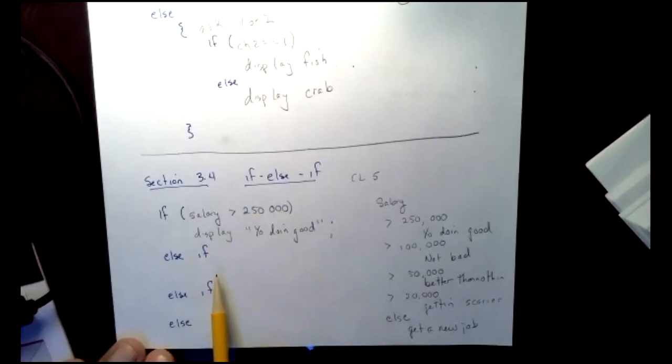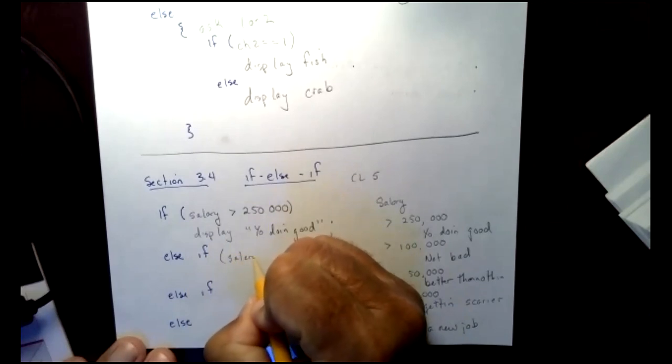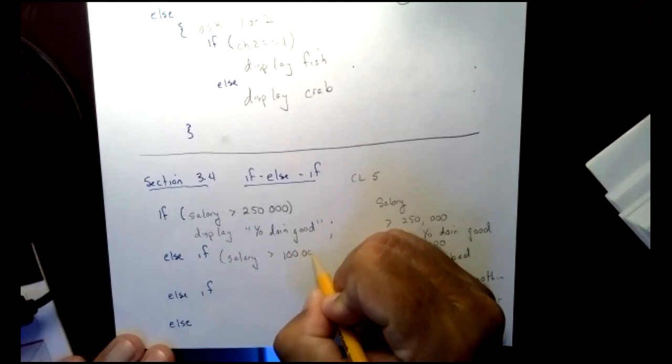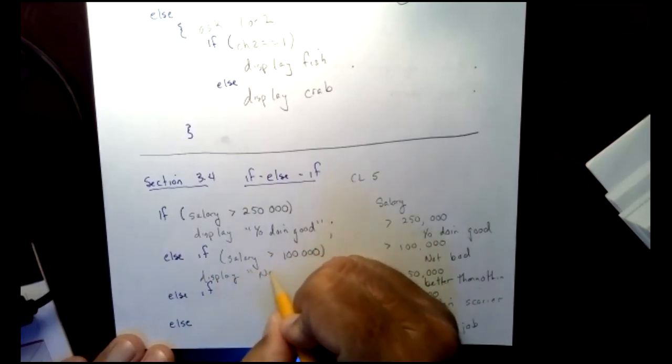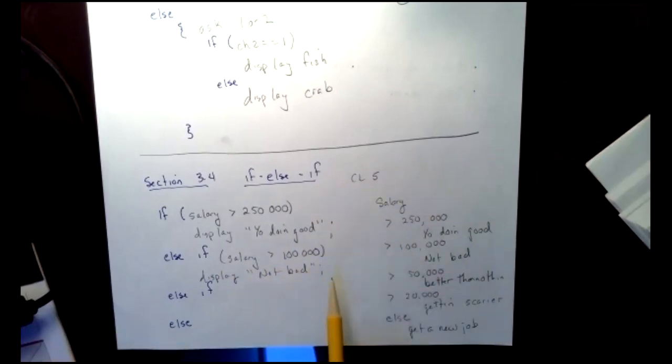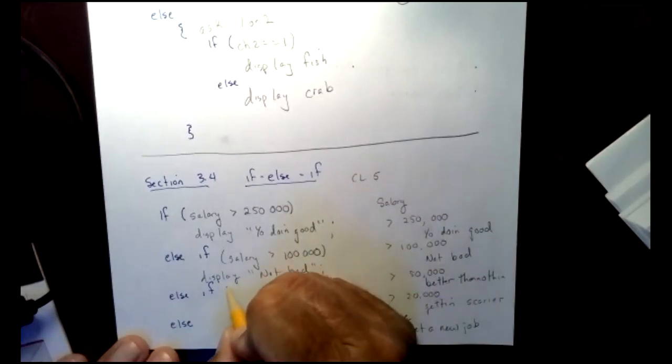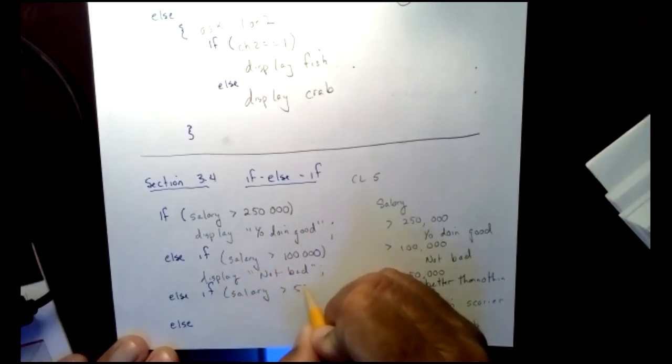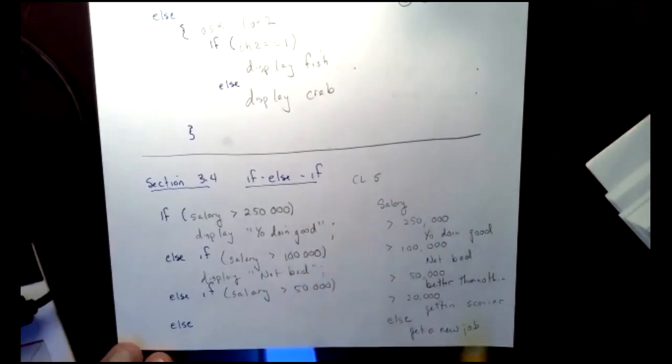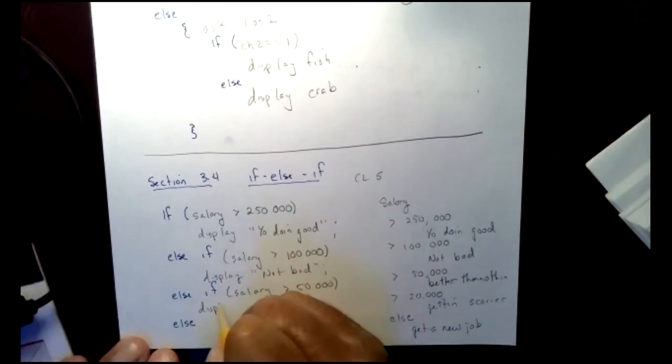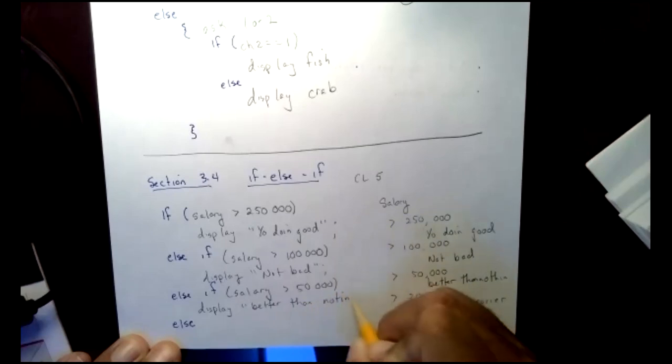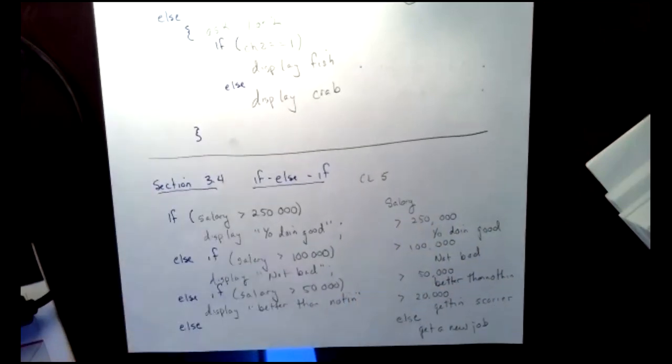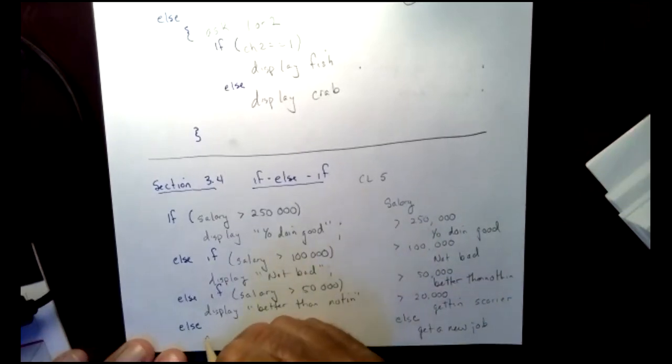So when I come to my next else, if I'm going to now say my salary is greater than 100,000. And now I'm going to display. And Amy said, not bad. Again, semicolon is going to jump me down past my else statement. And I have another one else if, let's do the 50,000 else if salary is greater than 50,000. Again, I'm not ending those. Then I want to put something she said better than nothing. So display better than nothing.